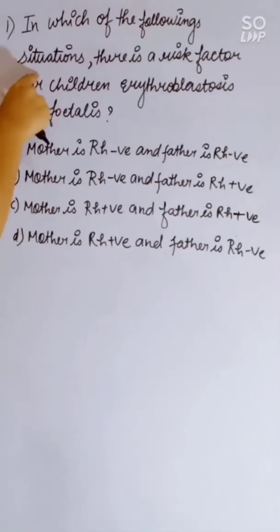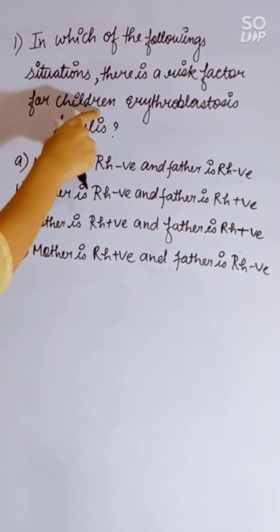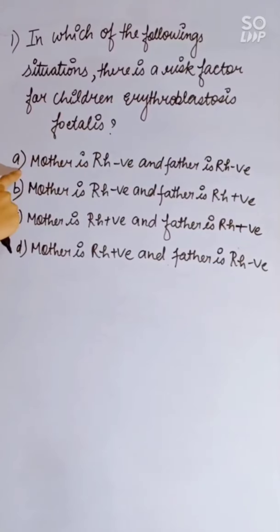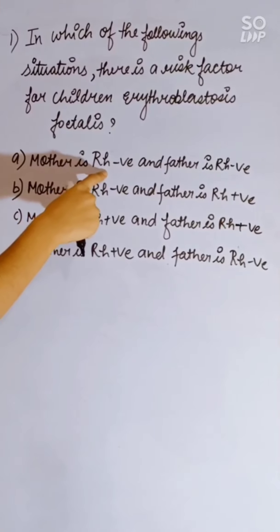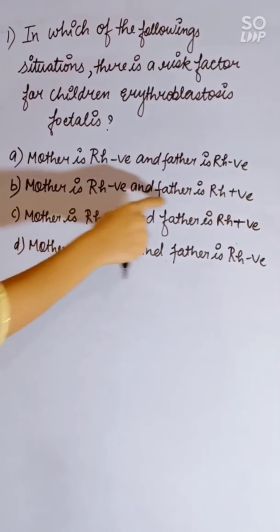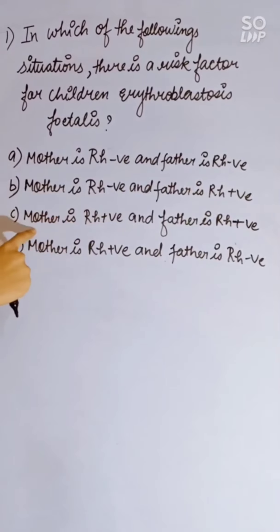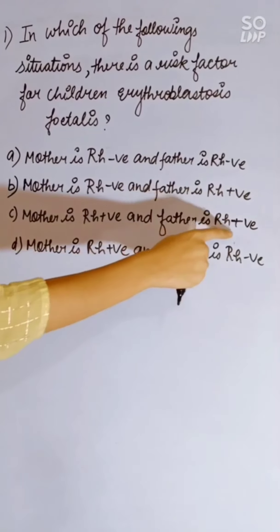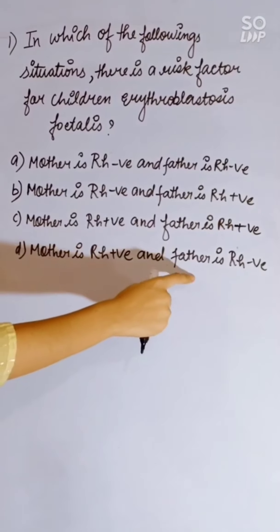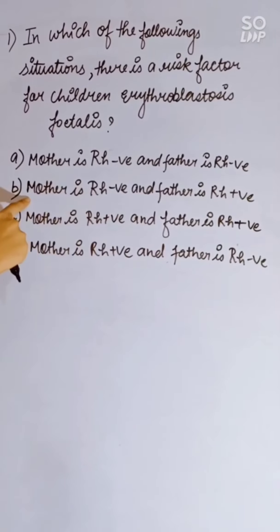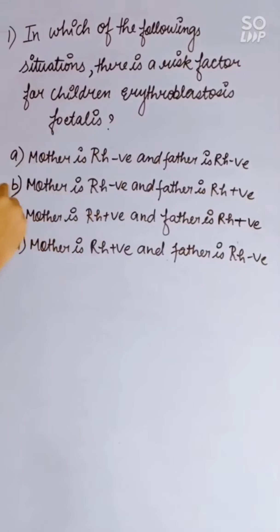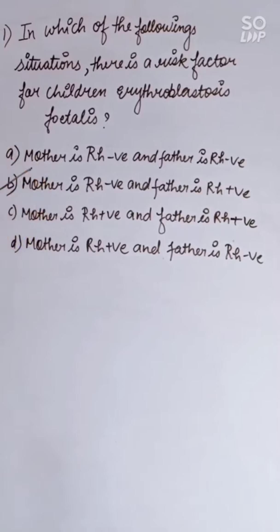In which of the following situations is there a risk factor for erythroblastosis fetalis in children? Options: mother Rh negative, father Rh negative; mother Rh negative, father Rh positive; mother Rh positive, father Rh positive; or mother Rh positive, father Rh negative. Correct answer is B — mother Rh negative and father Rh positive.